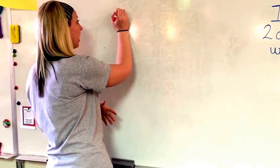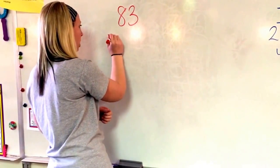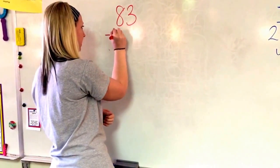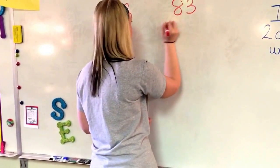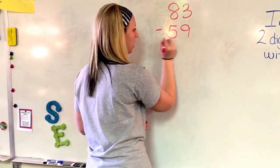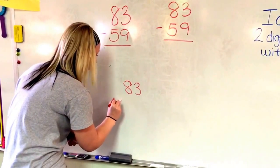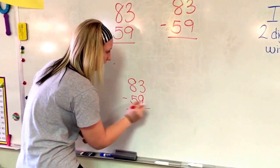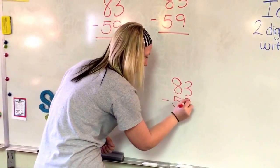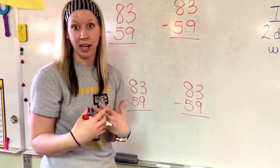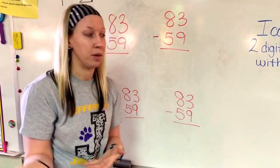And I'm actually going to write this problem up here a couple times. So I'm going to write 83 minus 59. And the reason I'm going to write it up here a couple times is because I want to show you a couple different ways that you can do this so that you can pick which way you like the best and which way works for you. Because what might work for me and might be my favorite way might not be your favorite way.